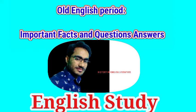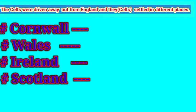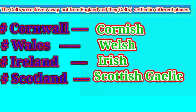First, we should know how the name England is formed. There were three races — Angles, Saxons, and Jutes — who came from Germany to Britain to help the English people, who were the Celts, to defeat or drive away the Picts and Scots. But gradually they settled down there, and the place got the name England by the name of the tribes Angles and Saxons. The Celts were also driven out from England.